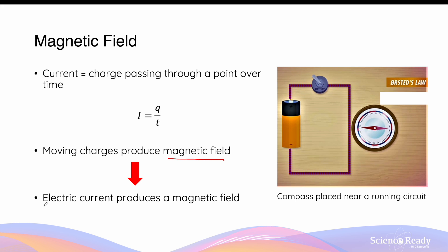We can say that an electric current produces a magnetic field. This relationship between charges, current, and magnetic field was discovered when a compass was placed next to an electric circuit. When a switch was closed, allowing the current to pass through the circuit, it affected the orientation of the compass needle, which we discussed was magnetic in property.